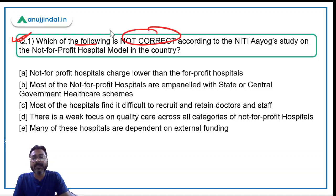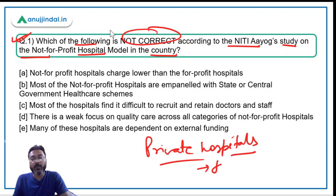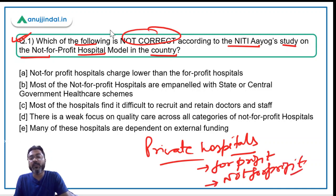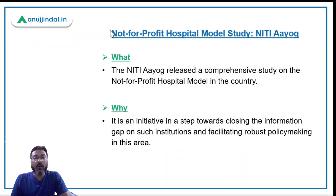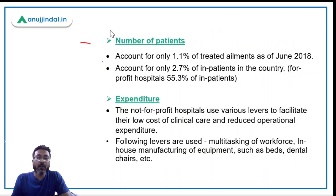The question asks which statement is incorrect according to Niti Aayog's study on the not-for-profit hospital model in the country. Private hospitals are divided into two types: for-profit hospitals and not-for-profit hospitals. Not-for-profit hospitals are impaneled under state or central government schemes. Niti Aayog's study was done to close the information gap on such institutions and facilitate robust policy making in this area.